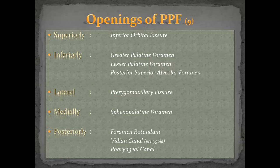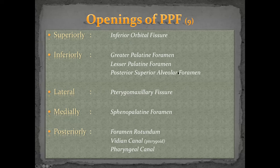The openings are very important. The pterygopalatine fossa has nine openings corresponding to its six-boundary structure. Superiorly: the inferior orbital fissure connects it to the orbit. Inferiorly: the greater palatine foramen, lesser palatine foramen, and posterior superior alveolar foramen. Medially: the sphenopalatine foramen. Laterally: the pterygomaxillary fissure connecting to the infratemporal fossa. Posteriorly: foramen rotundum, Vidian canal, and the pharyngeal canal, which is present in about 10% of cases.